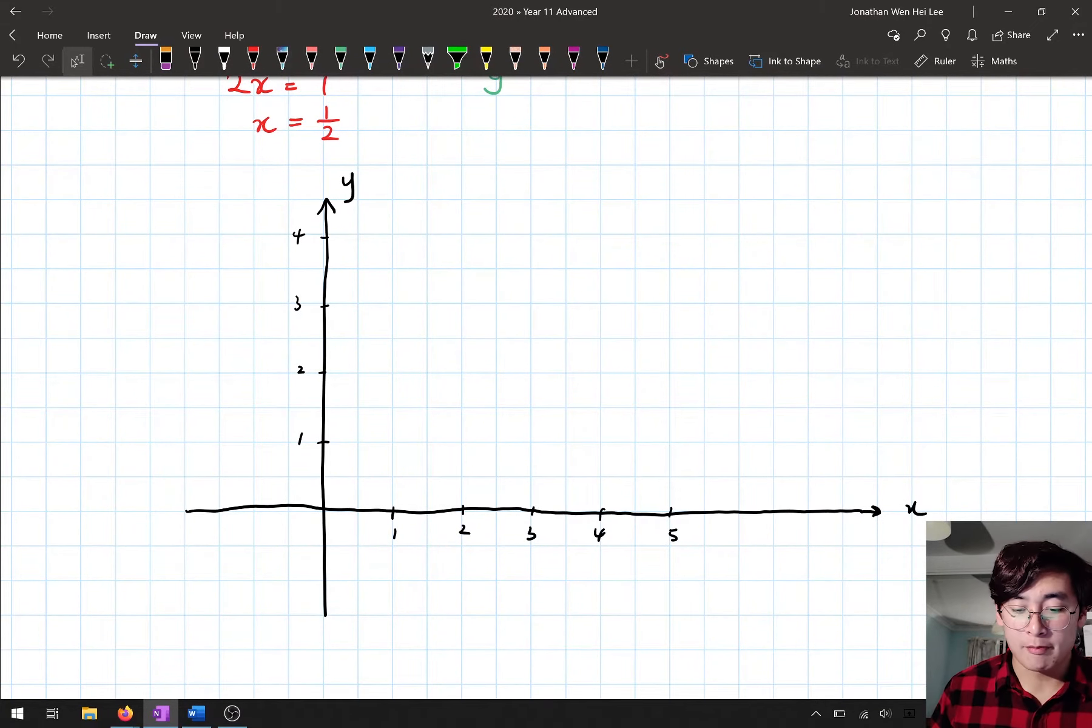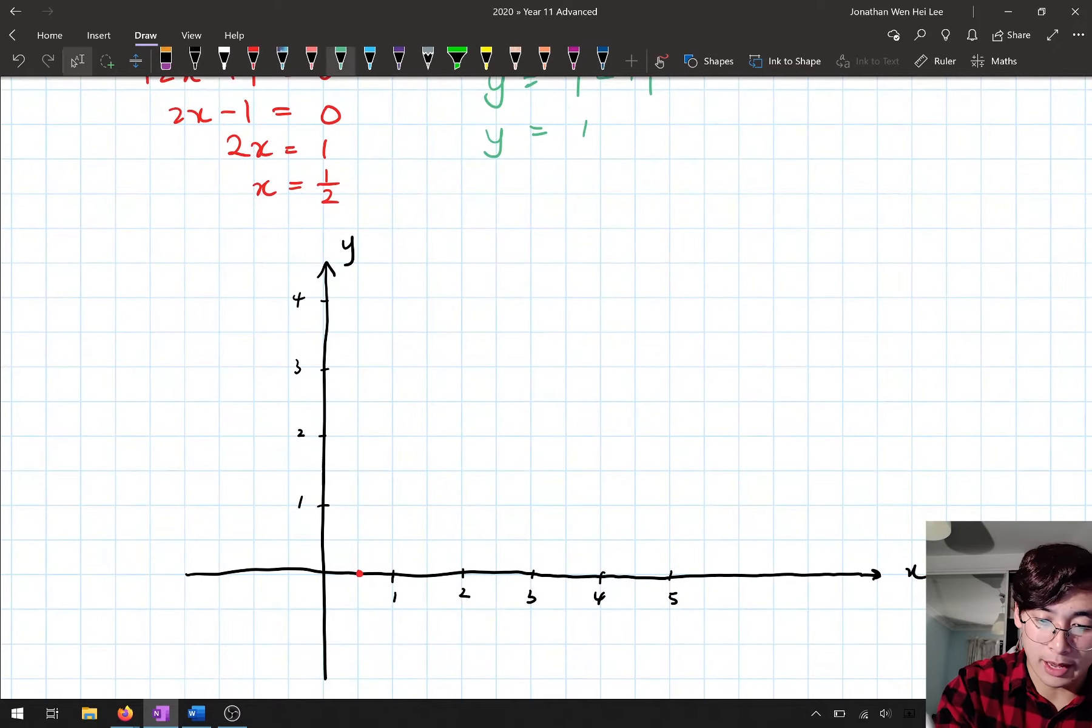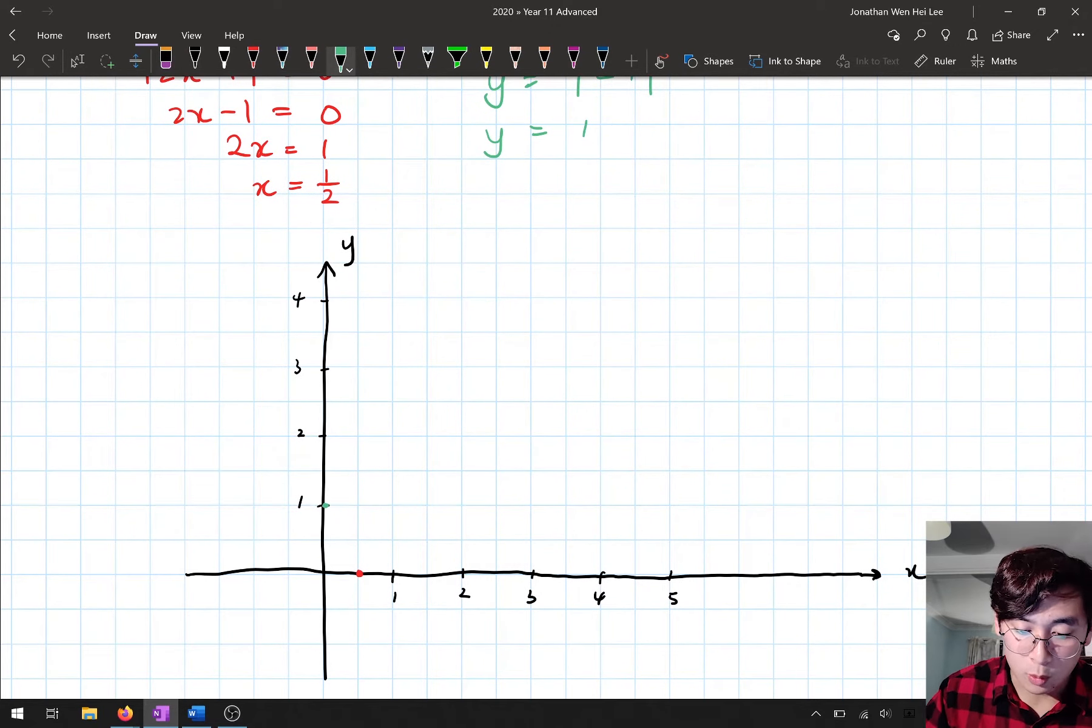So what I'm going to do is I'm going to draft my function. So the first thing was an x-intercept, which was at 1/2. So the tip of the v is there, and the y-intercept was at 1. And so what I'm going to get is a function that looks like this.